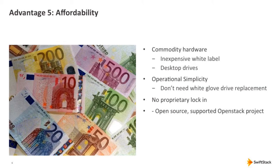Last is affordability. A key aspect we see in most cases is customers driving their operational and CapEx costs down because budgets are constrained. With Swift and this software-defined solution, we recommend commodity hardware — inexpensive white-label boxes and drives, desktop-style drives, as opposed to $1,500 SAS drives — and save the cost there. We're going to expect those drives to fail and handle those failures, but there's no need to put extra money into the hardware where we can save it. With that, we have this operational simplicity model, which also saves a lot of money. Because somebody's not going to come the next day to replace those drives, you don't have to pay for overnight shipping expenses and the on-site person. That's all baked into the cost.